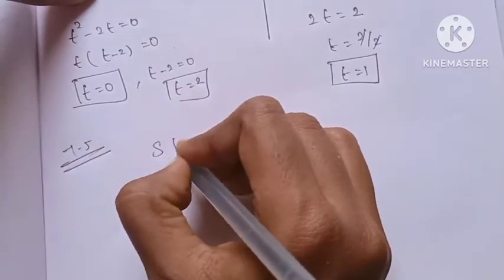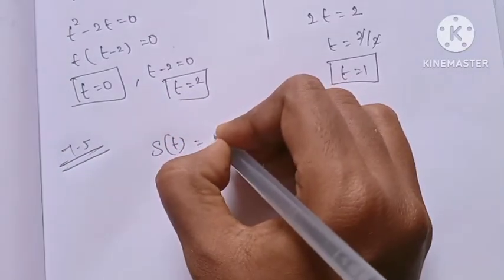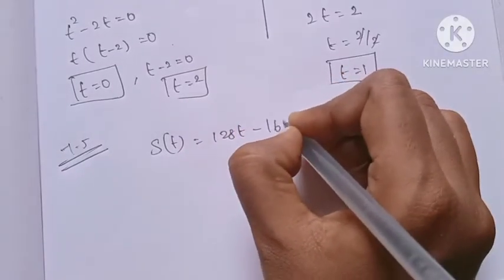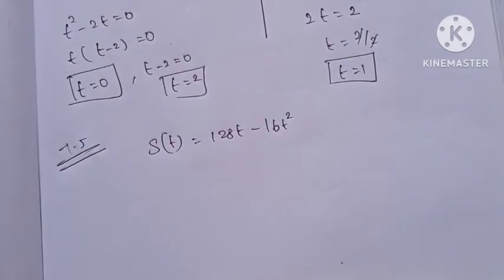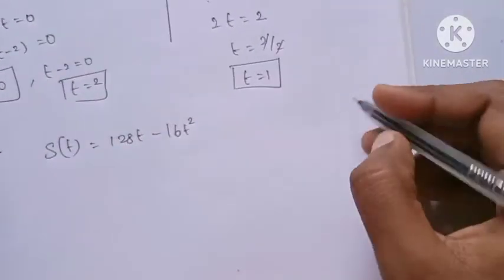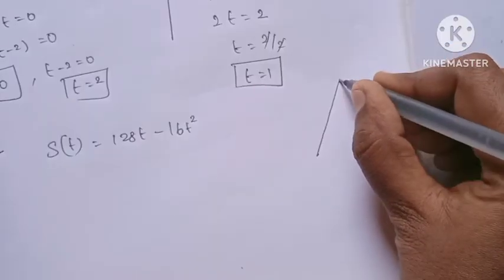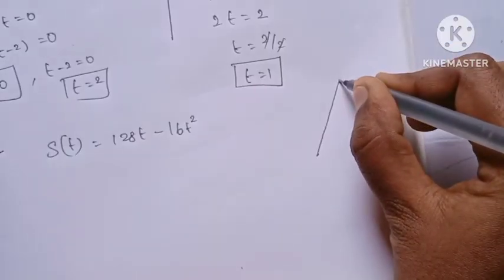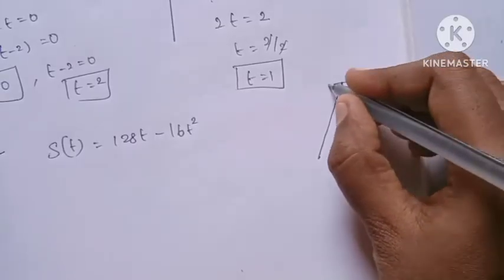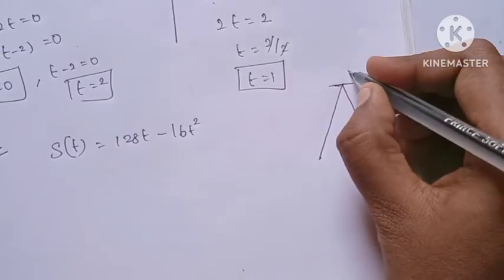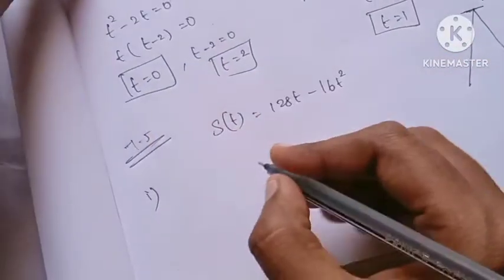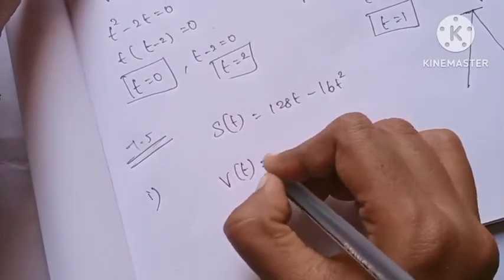The equation given is S of t is equal to 128t minus 16t squared. The first question is the maximum height. If you reach a certain point, that is the maximum height — and at that point, the velocity is zero.